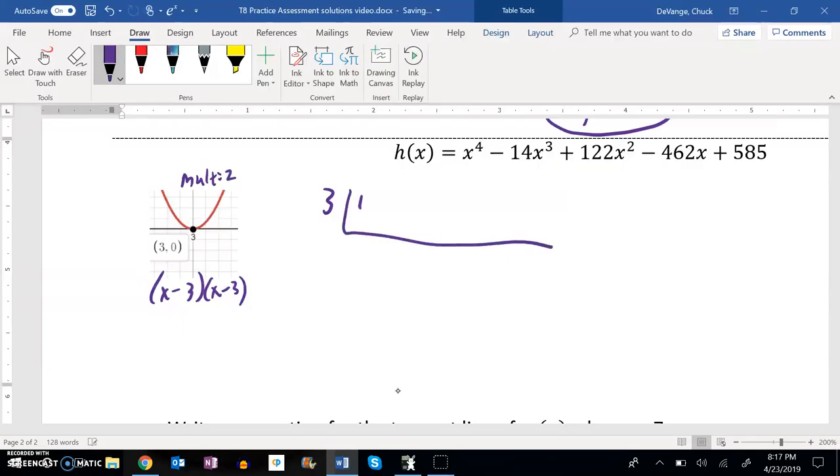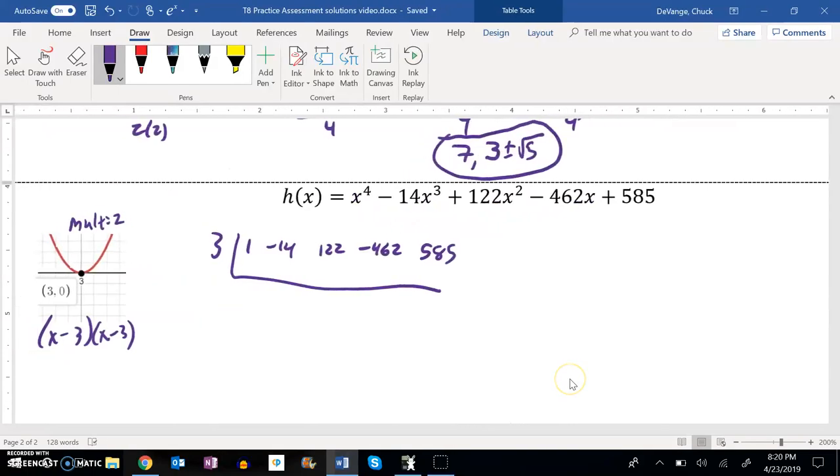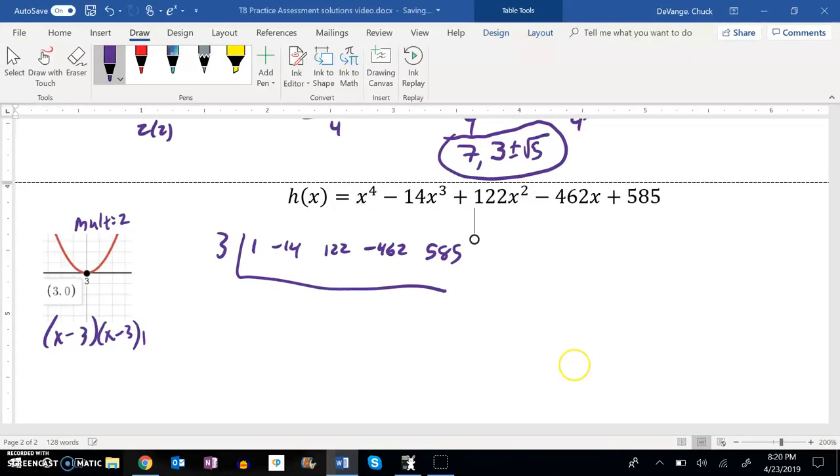So I'm going to have 3 go into 1x to the fourth minus 14x cubed, 122x squared, negative 462x is 585. So I'll keep going from here, bring down, multiply, add,